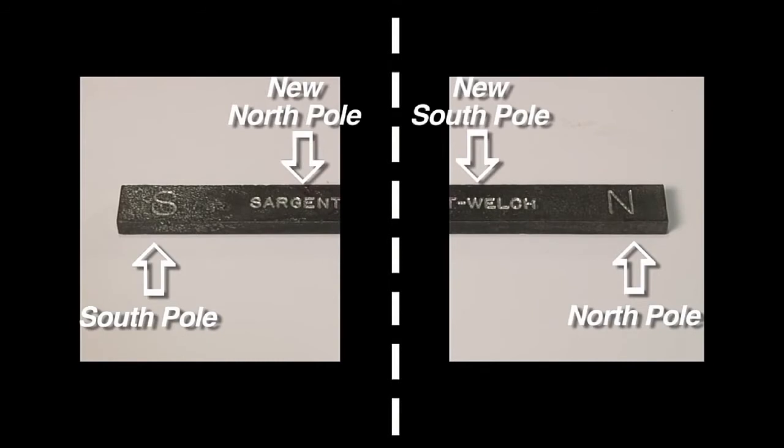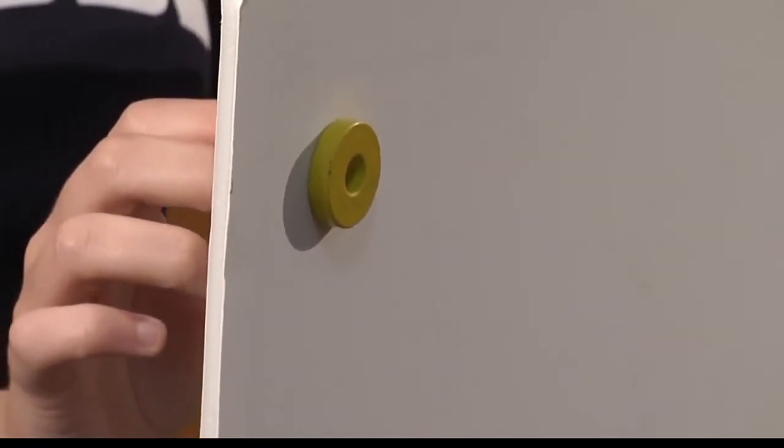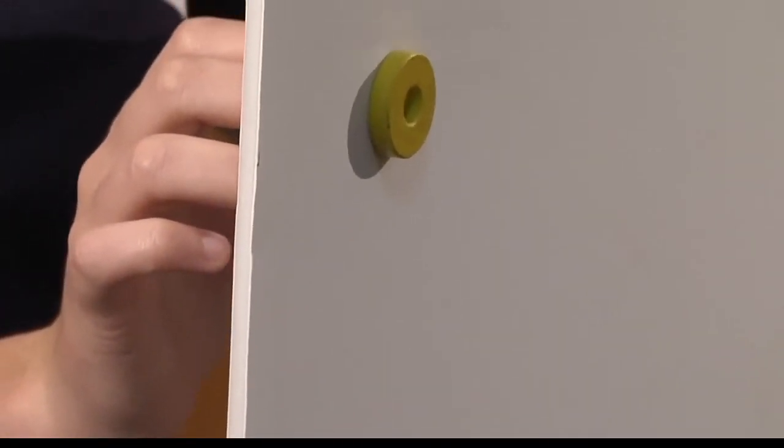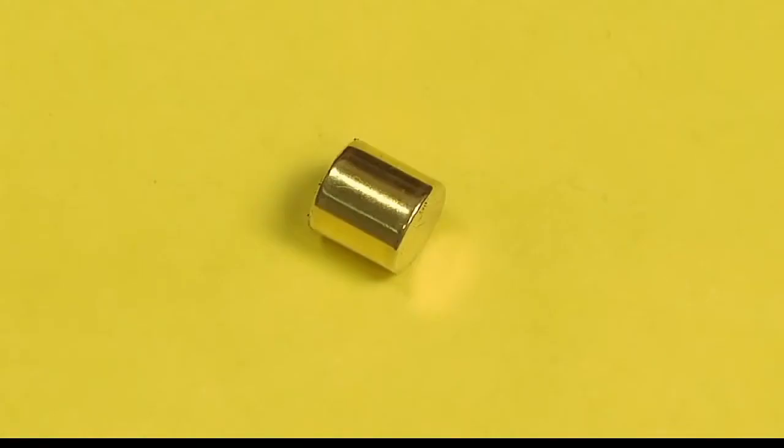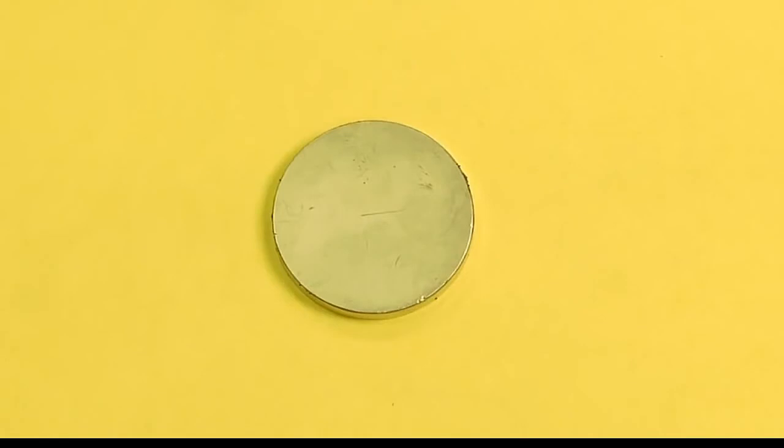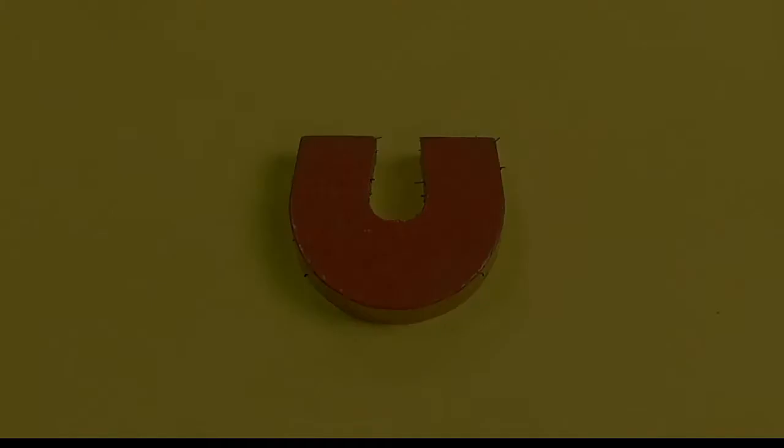You can't have a magnet with just one pole. The magnetic forces are quite strong and can act through other solid materials. The magnets come in different shapes. Some are cylindrical, disc-shaped, or even shaped like a horseshoe.